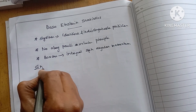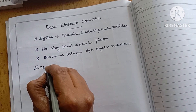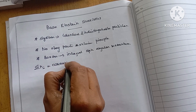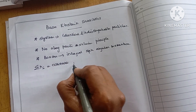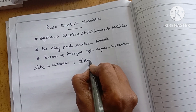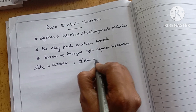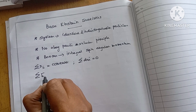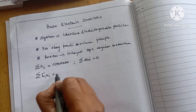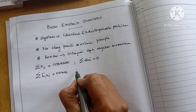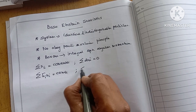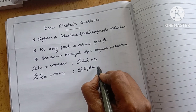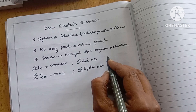The main assumption is that the total number of particles is taken as constant, so summation Ni equals a constant. If we differentiate this term we will get 0. Likewise, the summation of energy term into number of particles is also a constant term, so summation Ei times dNi is equal to 0.